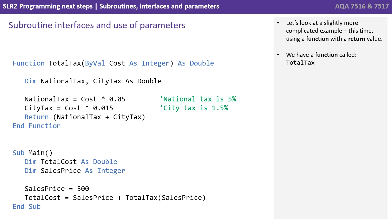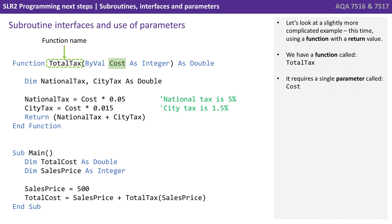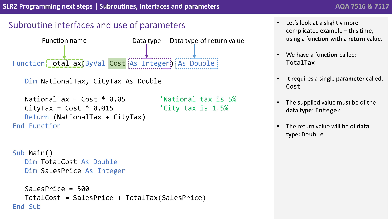Let's look at a slightly more complicated example, this time using a function with the return value. We have a function called total tax. It requires a single parameter called cost. The supplied value must be of the data type integer. And the return type will be of the data type double.